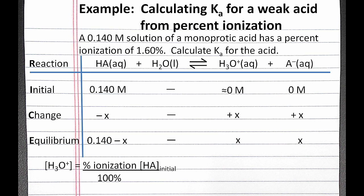Next, we can calculate the hydronium ion concentration at equilibrium from our percent ionization and the initial concentration of our weak acid. The equation is percent ionization divided by 100% times the initial concentration of our weak acid. Filling in the numbers and plugging it into our calculator, we'll get 0.00224 molar, which from our equilibrium row is equal to X.